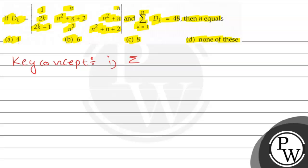The key concept: when k goes from 1 to n, the summation of k means we have to add the first n natural numbers. So summation k equals n times (n plus 1) divided by 2. This implies that 2 times the summation of k, going from 1 to n, gives us n(n+1).